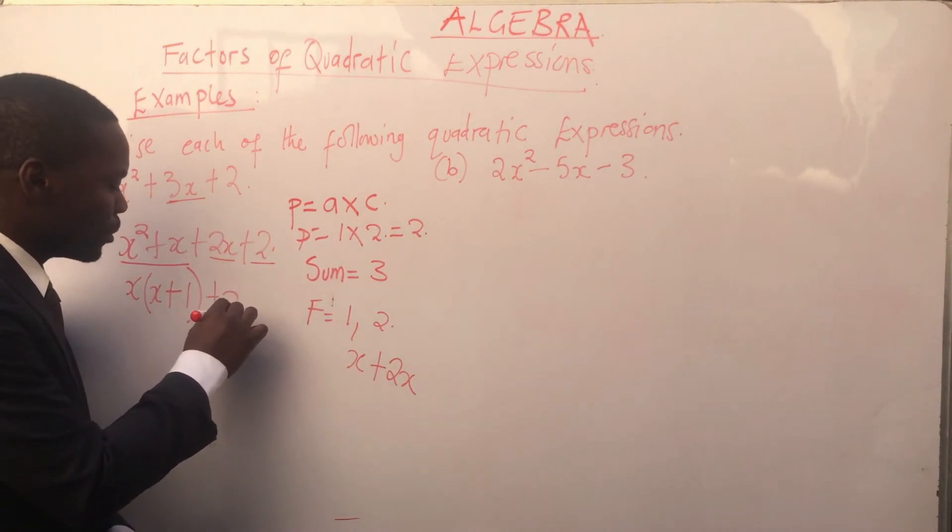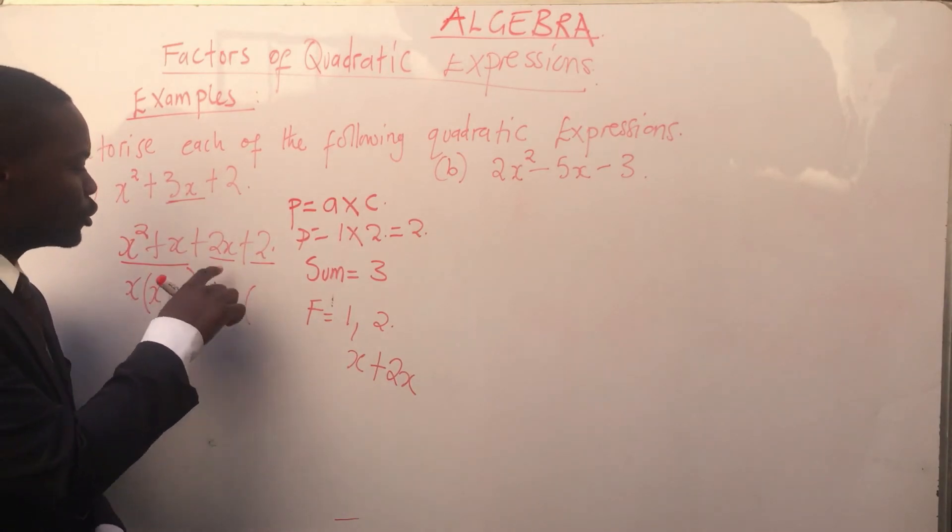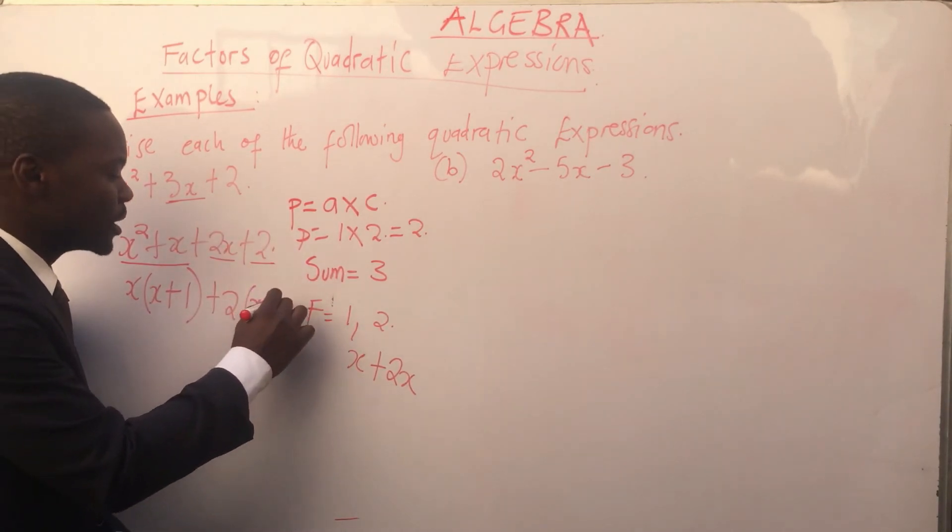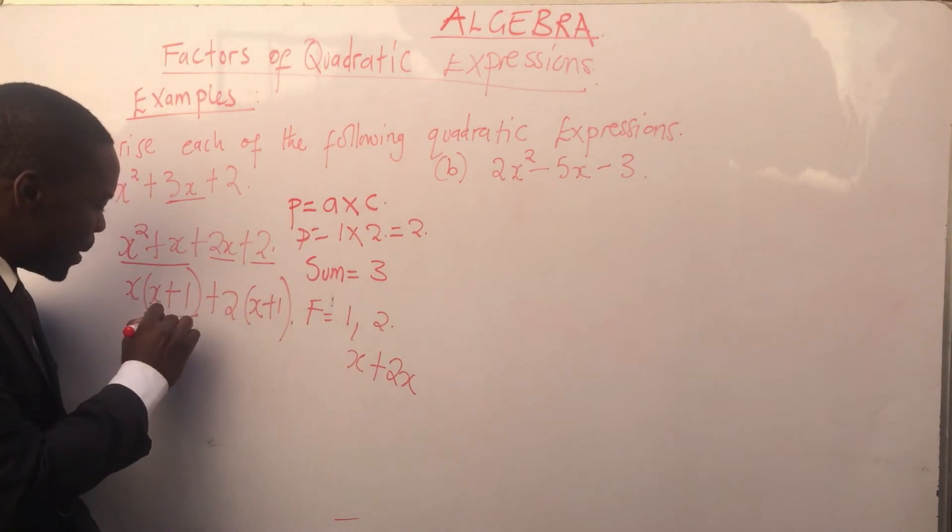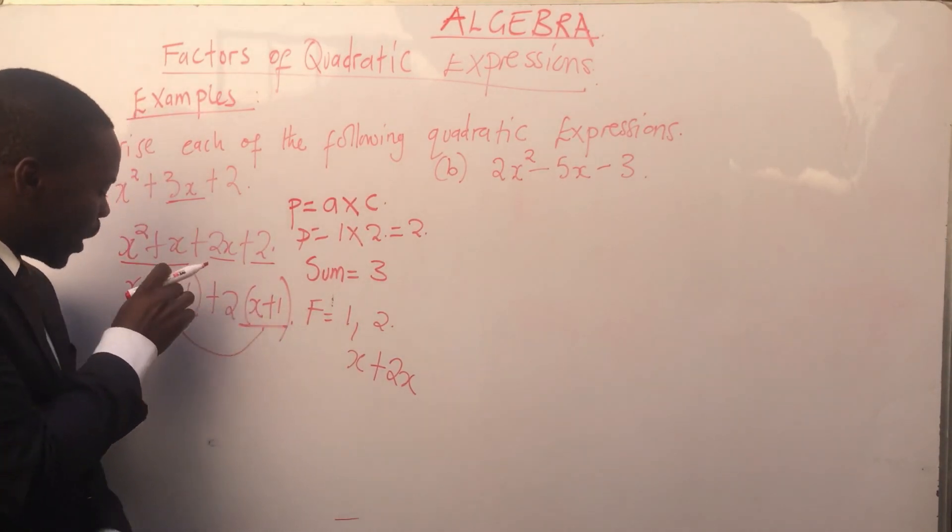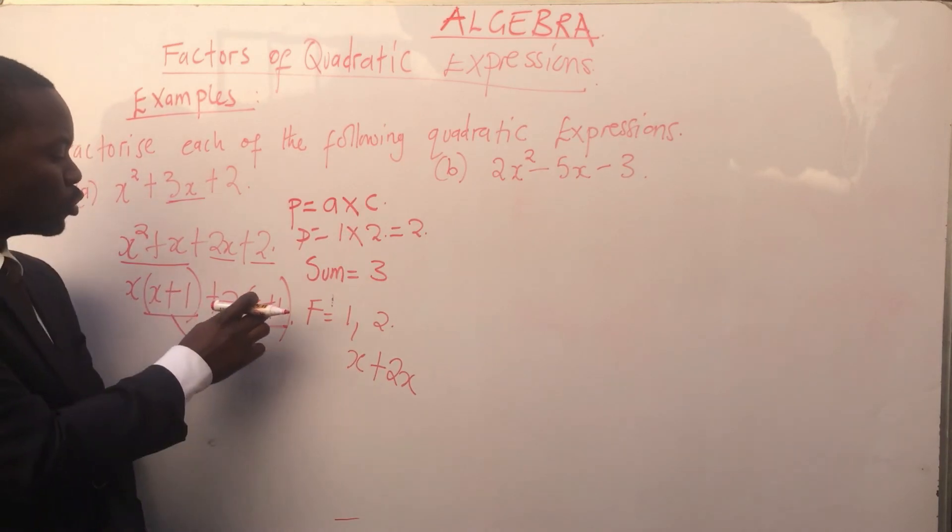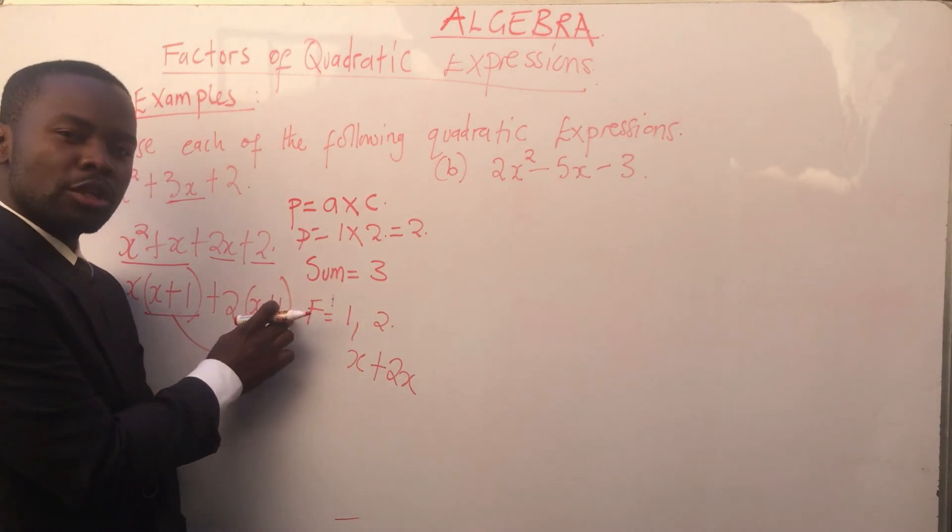What is a common factor here? It's positive 2. 2 into 2x is x, 2 into 2 is positive 1. As you can see, this factor must be equal to this. Whatever is inside here must be equal to whatever is inside here.